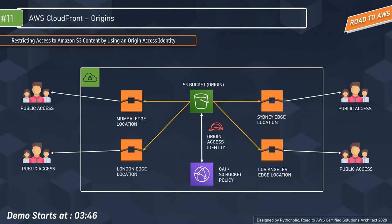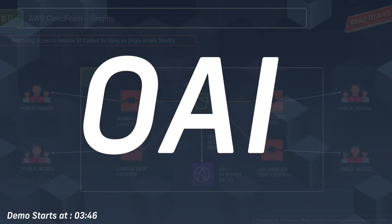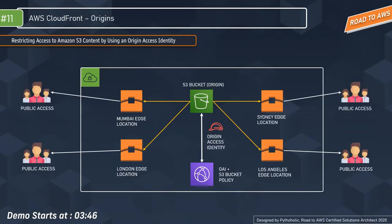Here's a simple trick to remember OAI. The S3 bucket acts as the origin — the origination point of the service or data we want. To access the origin, we need an identity. It will act as a virtual user, based on which we will be able to access the content provided at the origin. That's how you can remember origin access identity.